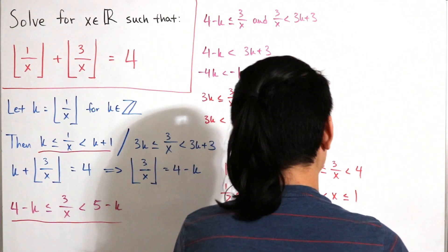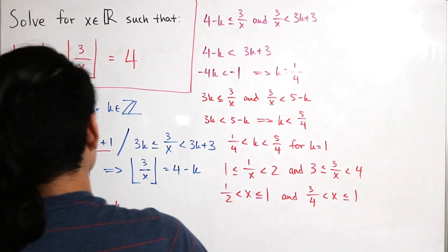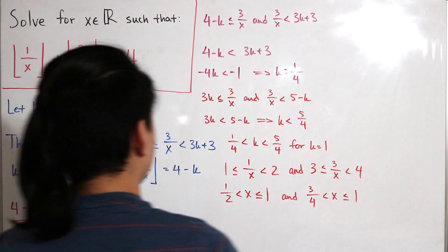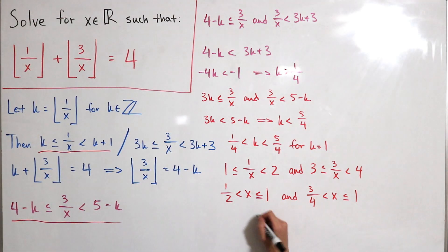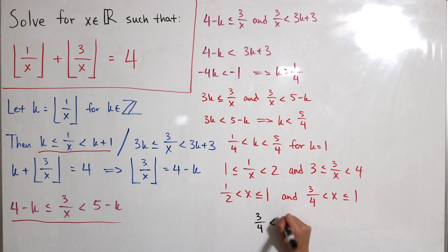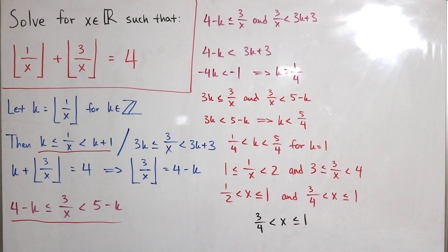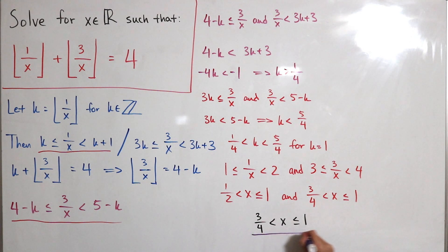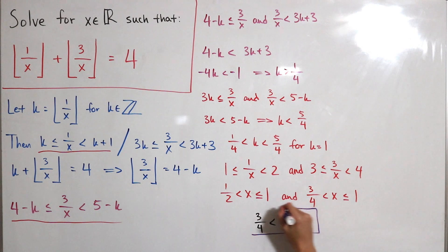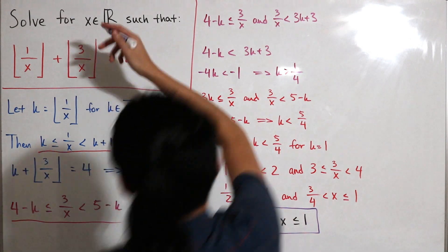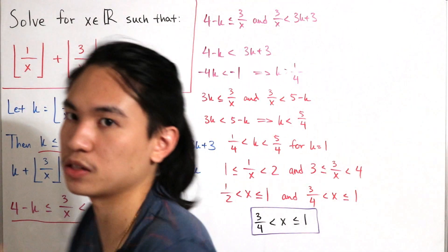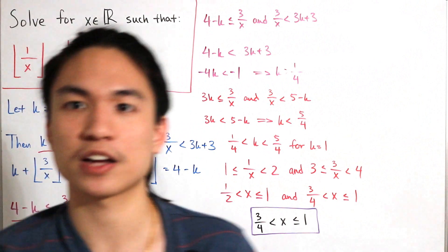Therefore the final answer is: x satisfies 3 over 4 strictly less than x, less than or equal to 1. That compound inequality satisfies our original floor equation. Pretty cool!